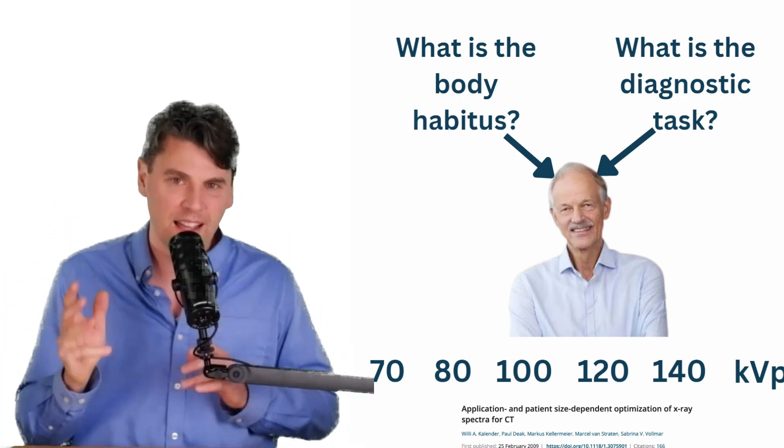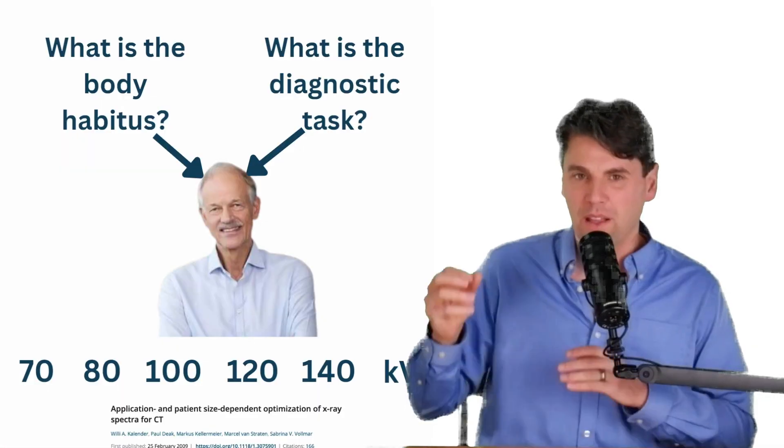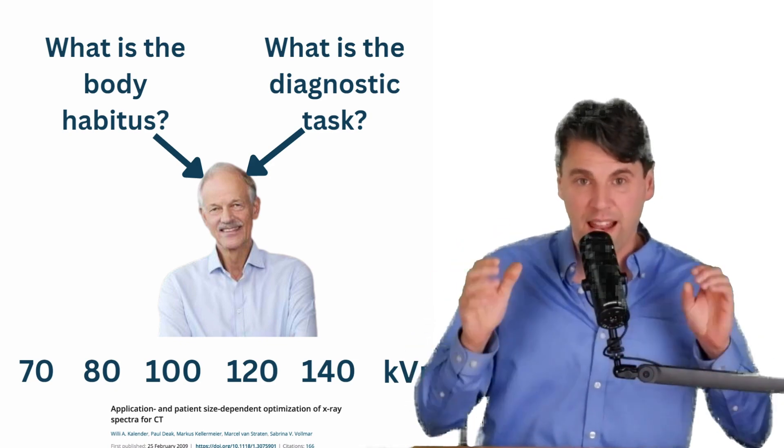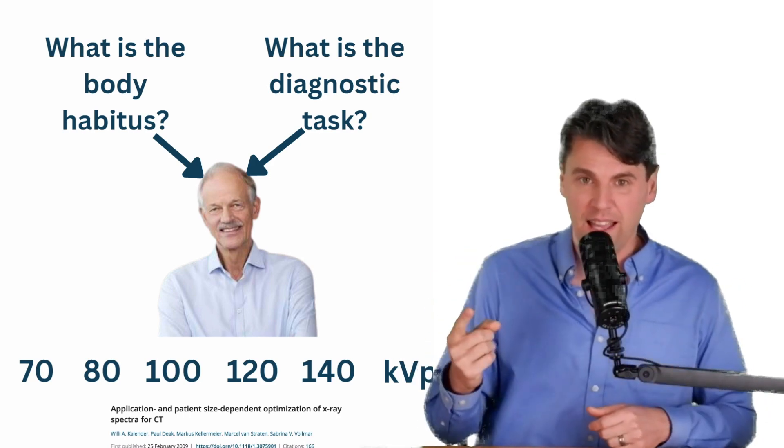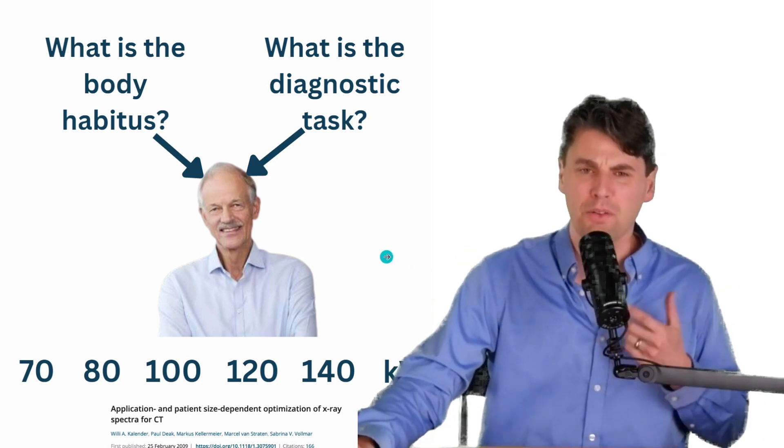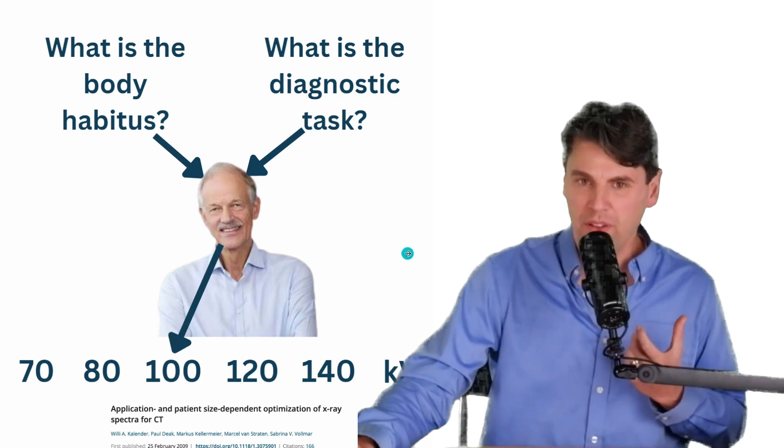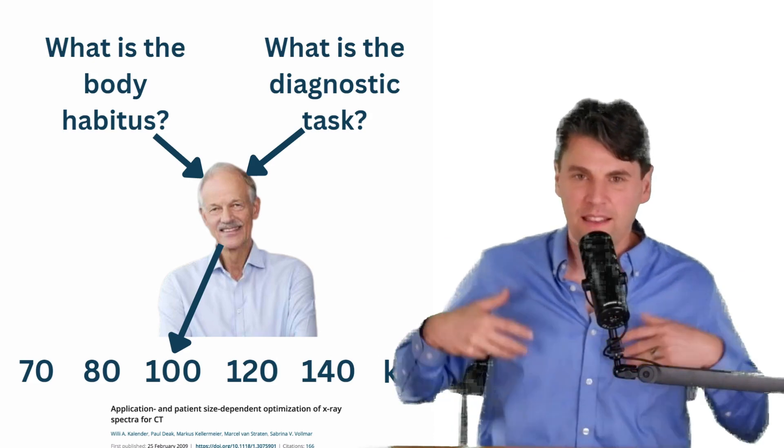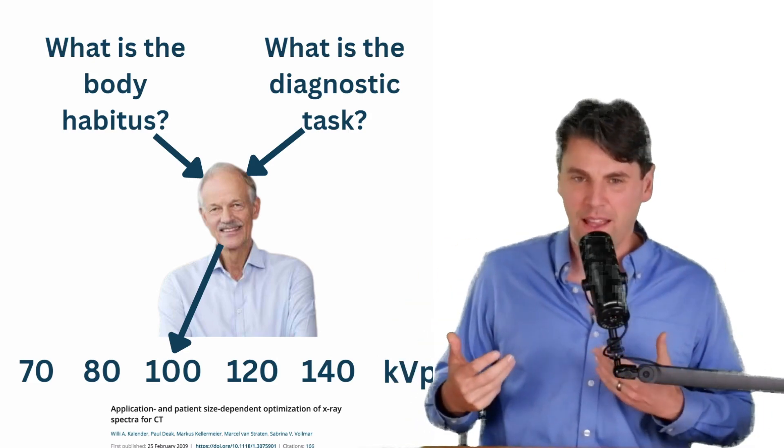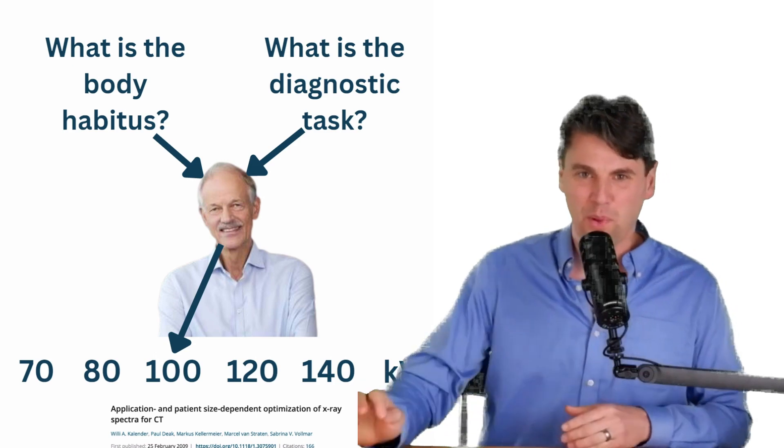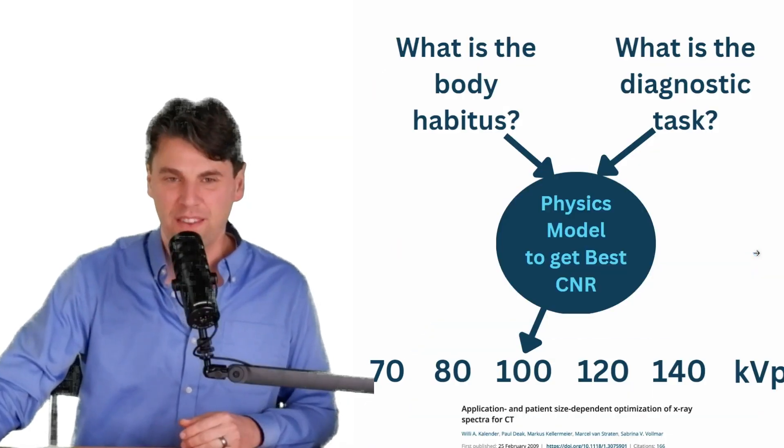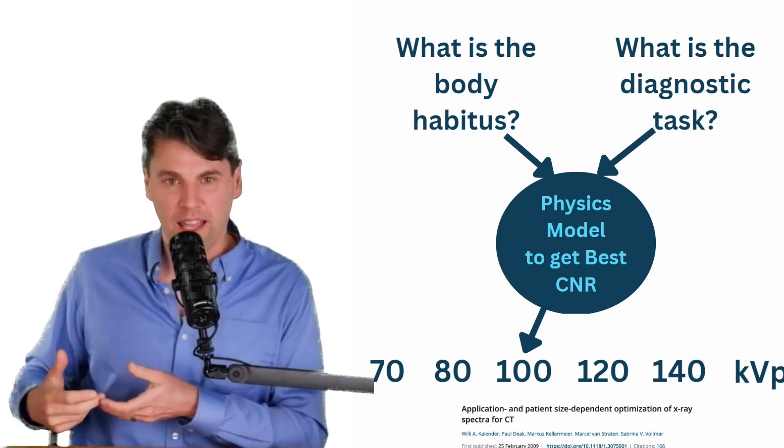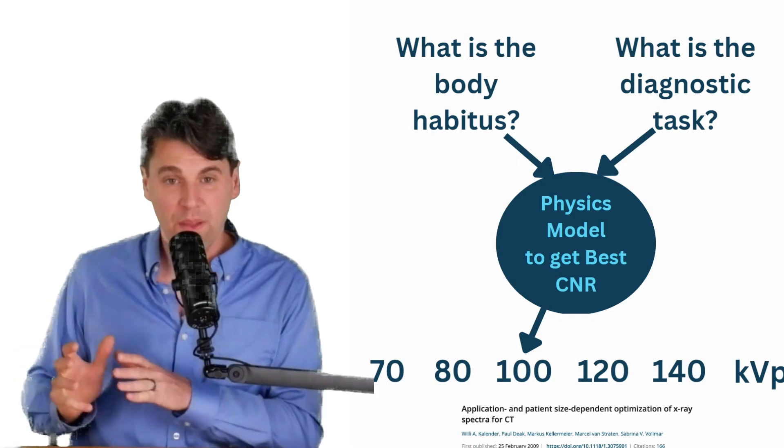Because we talked about penetration being a huge thing for KVP, right? And then you say, what's the diagnostic task that you want to do? Because we also talked the big area that you're going to get improvement is with things that have a significant photoelectric contribution, like iodine. And Willie could tell you roughly, probably, what KVP should you select? If you have a few given options, what KVP should you select? And it's not magic that he's doing that by. And it's not even some fancy new deep learning algorithm. It's actually just the physics, right?